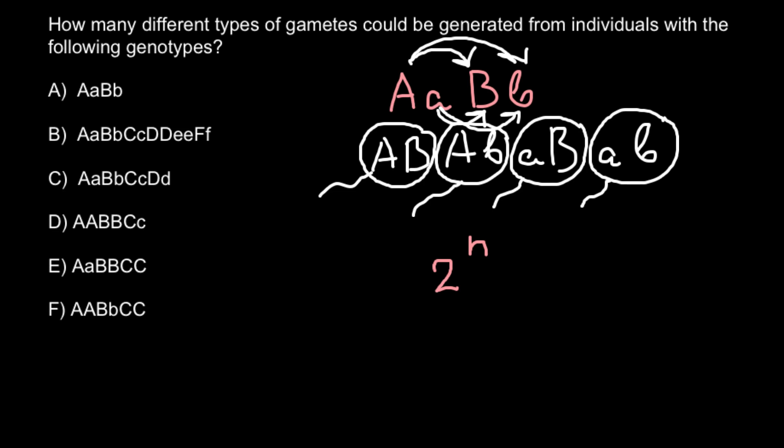For example here we have two genes that is heterozygous. So the answer would be 2 raised 2 would be 4. And as you see our answer here is 4. So here we have 4 different gametes.